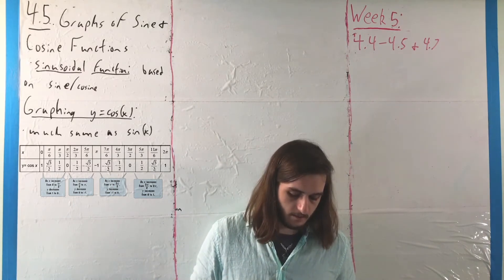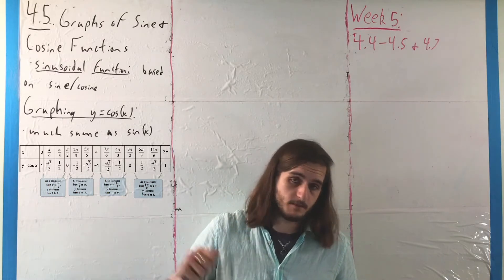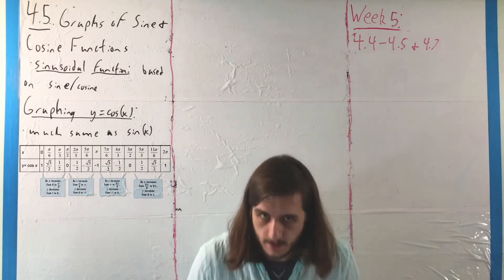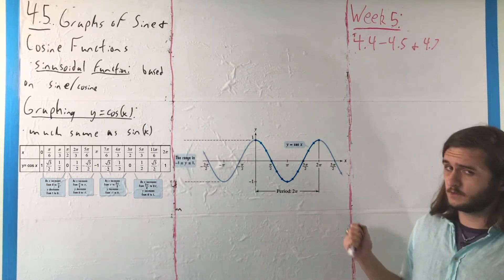pi over 6, pi over 3, pi over 2, 2 pi over 3, 5 pi over 6, and pi, then flip them all over to the other side of the axis, and we get a very similar picture from the cosine function.